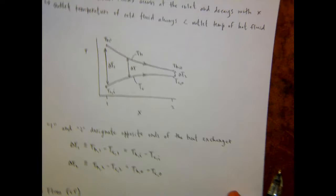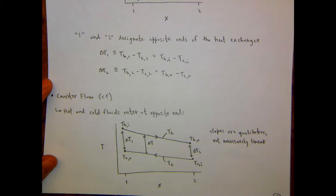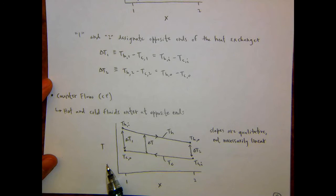The specific expressions for delta T1 and delta T2 depend on if you're talking about a parallel flow or a counter flow exchanger. We talked about parallel flow, and then just started talking about counter flow heat exchangers - so this is where we'll pick back up today. For parallel flow, the hot and cold fluids enter at the same end and flow in the same direction. But for counter flow, they enter at opposite ends and flow in opposite directions.